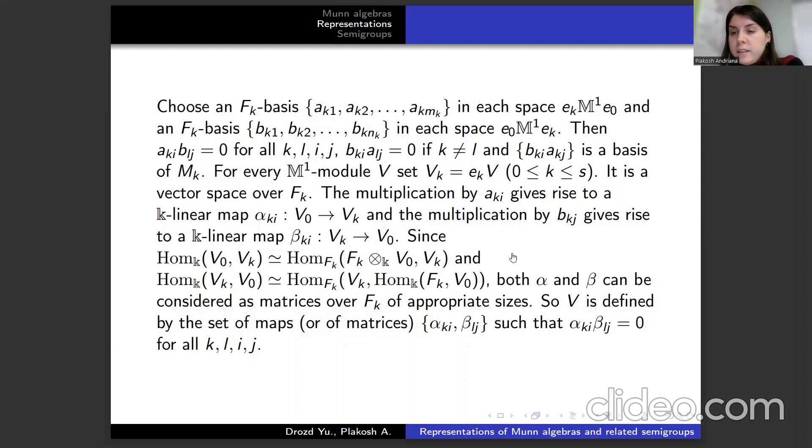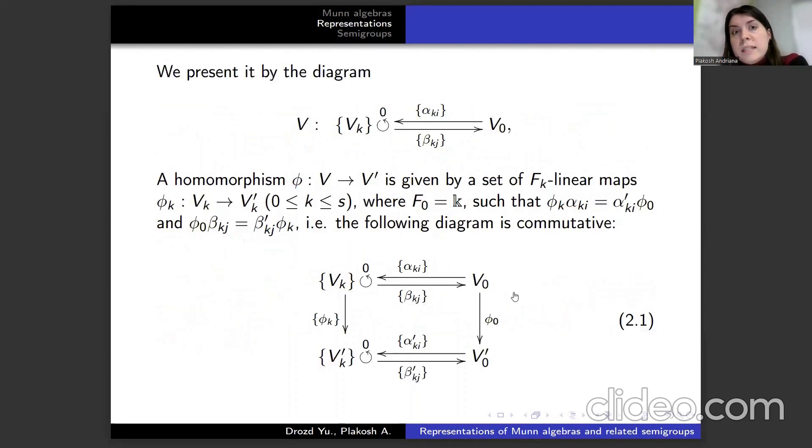So V is defined by the set of maps or matrices αₖᵢ, βₗⱼ such that αₖᵢ∘βₗⱼ equals 0 for all k, ℓ, i, j. We present it by a diagram. The homomorphism φ is given by a set of Fₖ-linear maps, where F₀ is k, such that the equation is true. This means the following diagram is commutative.